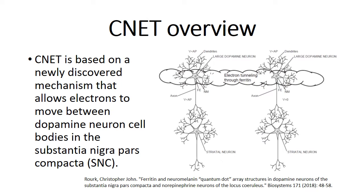CNET is based on principles of quantum biology related to electron tunneling in proteins, which is generally accepted to occur by researchers in that field. Ferritin, an iron storage protein complex, exhibits electron tunneling properties that are different from electron tunneling that usually occurs in proteins and can transfer substantial numbers of electrons over relatively long distances, such as the distances between cell bodies, when it is in a sufficiently ordered combination. Electron tunneling on this scale has been observed in substantia nigra pars compacta or SNC tissue, where there are high concentrations of ferritin.